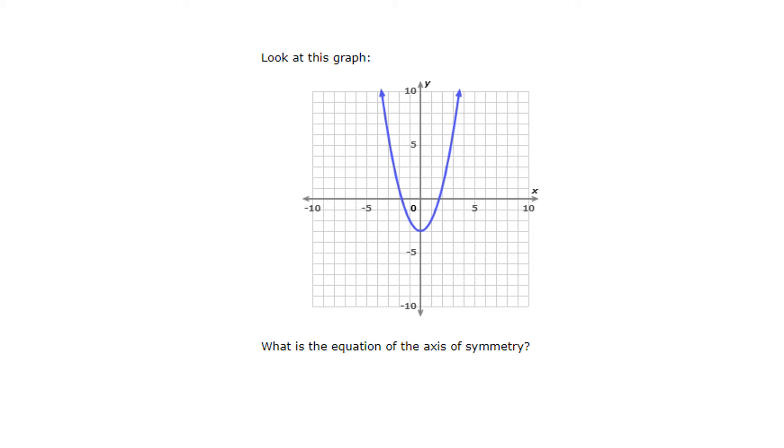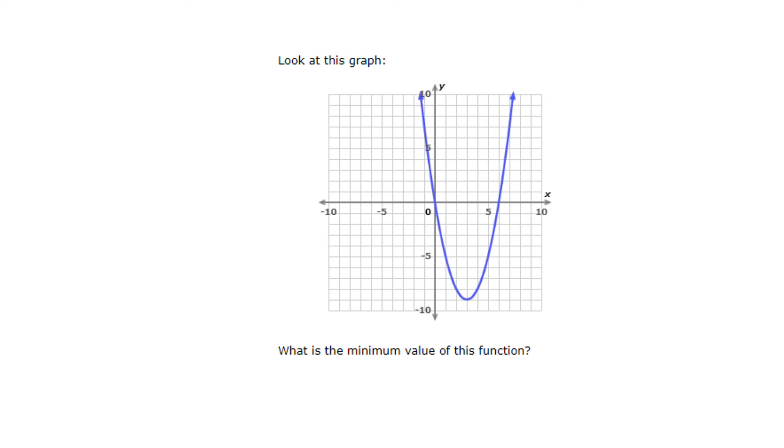The axis of symmetry is the opposite of the minimum or maximum. The axis of symmetry is going to be dealing with the x part of the vertex, or the tip. The minimum, and I will start with that one.